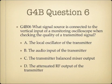Question 6. What signal source is connected to the vertical input of a monitoring oscilloscope when checking the quality of a transmitted signal? A, the local oscillator of the transmitter. B, the audio input of the transmitter. C, the transmitter balanced mixer output. Or D, the attenuated RF output of the transmitter.